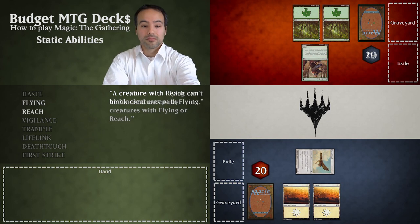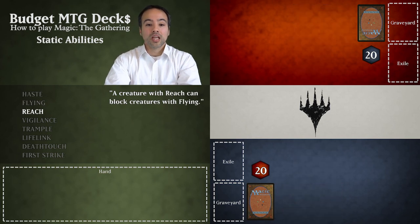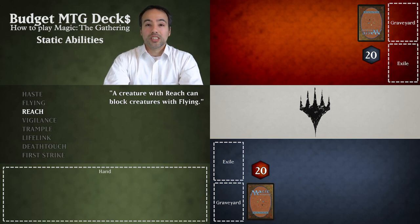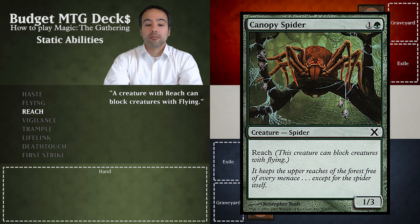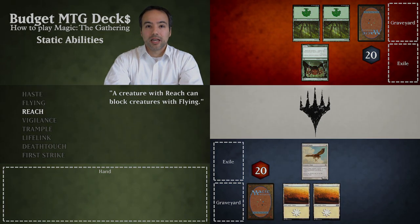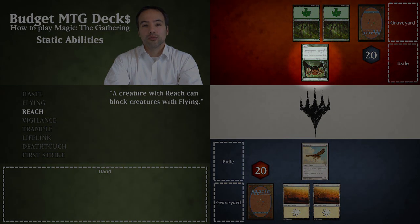Reach is up next. A creature with reach can block creatures with flying. Basically they don't have flying themselves but do have the capability to intercept flyers. An example of a creature with reach is Canopy Spider. This creature can block creatures with flying. Let's look at the last scenario again but this time our opponent has a Canopy Spider instead of a Runeclaw Bear.